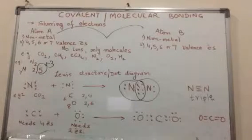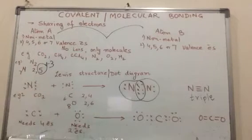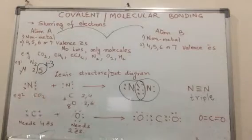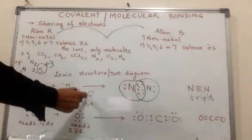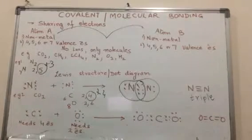Carbon has atomic number six, configuration 2,4. Oxygen is 2,6. Carbon has four electrons in the valence shell and needs four more to have eight. Oxygen only needs two.